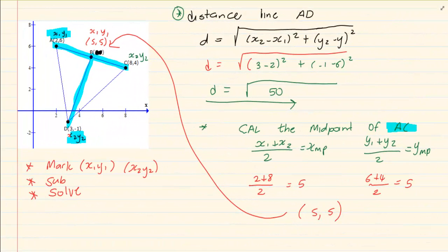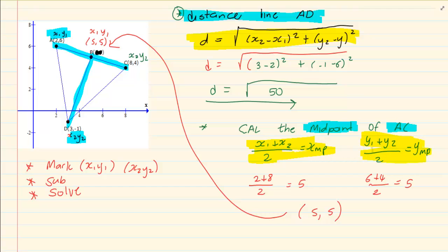What have we learned from our summaries? Number 1, you need to know the distance formula. Number 2, you need to know the midpoint. Our distance formula is the root of x2 minus x1 all squared plus y2 minus y1 all squared. Your midpoint formula is x1 plus x2 over 2 is equal to the x of midpoint, and y1 plus y2 over 2 is equal to the y of midpoint.